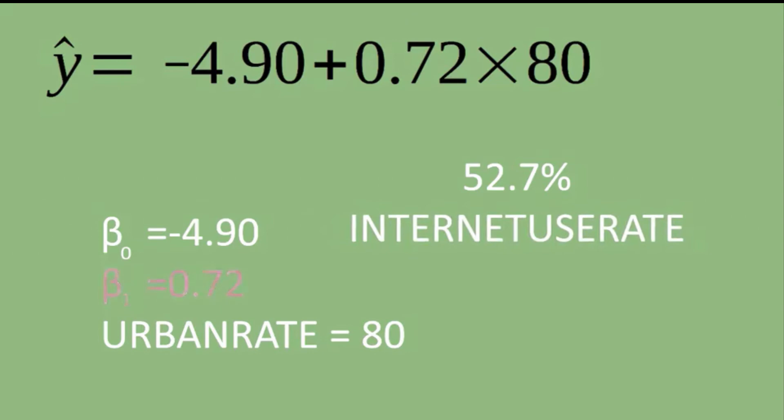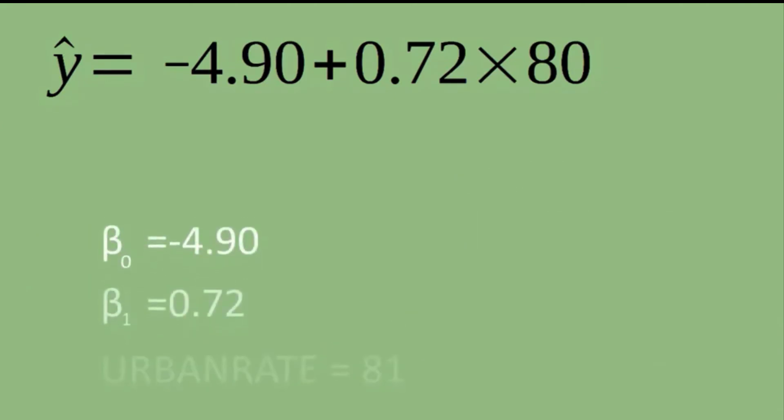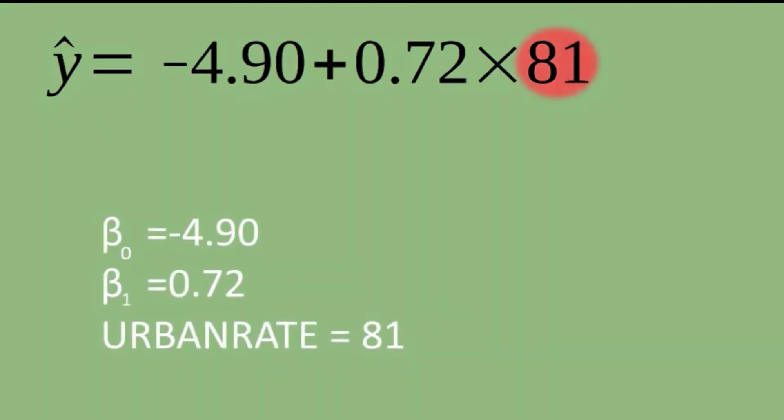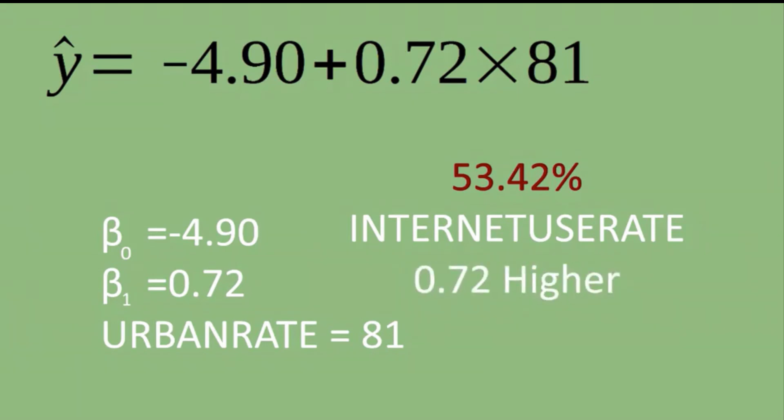Also note from our beta sub 1 that this value is by how much internet use would increase for every 1 unit increase in urban rate. For example, if we had a country with 81% urbanization, we would know that we would expect their internet use rate to be 0.72 people higher than a country with 80% urbanization.